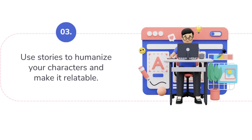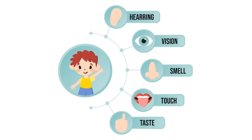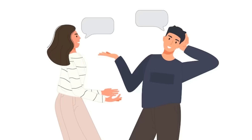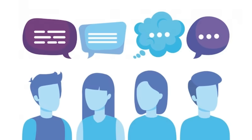The next point is to add sensory details and emotions to create vivid images. For example, you can describe how the setting looks, sounds, smells, feels, and tastes, and how the characters feel and react to events. Try to use dialogues, metaphors, and anecdotes to make your story more engaging. You can use dialogue to show the personality and voice of characters, metaphors to compare abstract concepts, and anecdotes to share personal or humorous experiences that relate to the story.